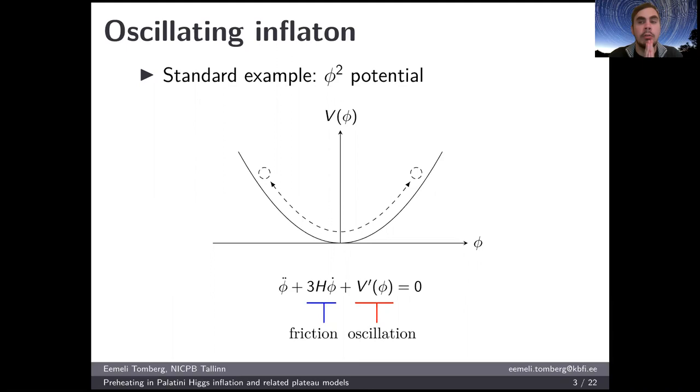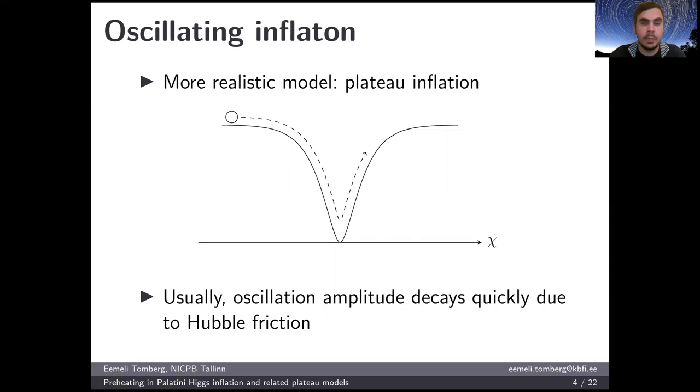Let us start with a very simple example of what is well known. This is inflation with a φ² potential. For large field values, we have slow roll inflation, but as time goes on, the field approaches this potential minimum and eventually starts to oscillate there. This oscillation is driven by the potential, and there is also a friction term due to the expansion of the universe, which causes the oscillation amplitude to go down. Reheating and the phenomenology of particle production in these models has been studied for a long time and is very well known.